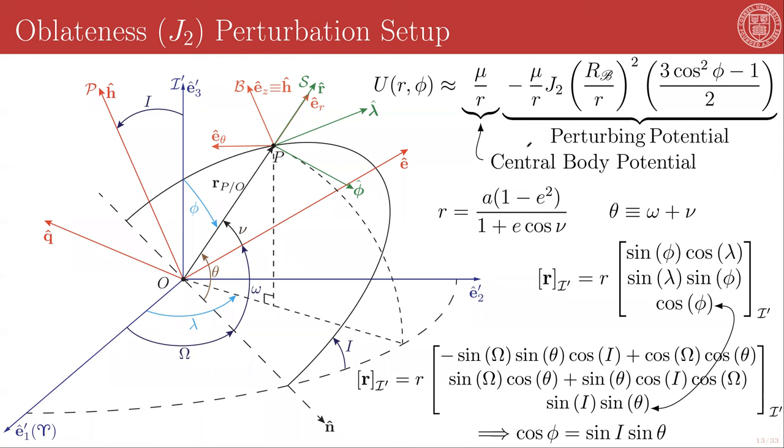First, as we've already seen, the J2 term is dominant for many central bodies and many of the major bodies of our solar system.